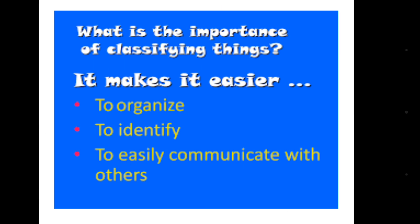To summarize, why do we do classification? First, to organize. Second, to identify — we can easily identify any organism. Third, we can easily communicate with others, because by using the scientific name we can easily recognize any organism anywhere in the world.